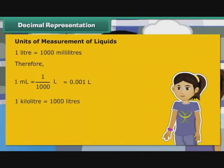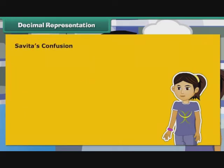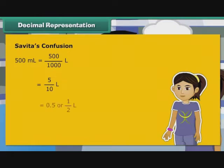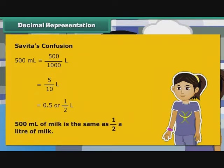1 kilolitre is equal to 1000 litres. Therefore, 1 litre is equal to 1 by 1000 kilolitre, that is 0.001 kilolitre. Now, we revisit Savita's confusion. 500ml is equal to 500 by 1000 litre, that is equal to 5 by 10 litre, that is equal to 0.5 or 1 by 2 litre. So 500ml of milk is the same as half a litre of milk. Savita is now relieved.